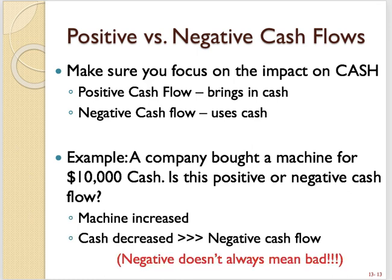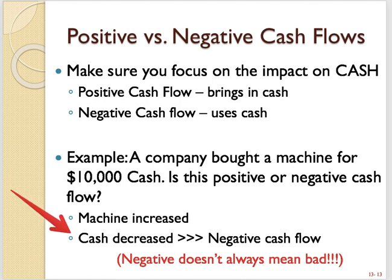Well, in that transaction, two things happen, as is true of any transaction — there's always a giving and a receiving, a give and a take. In this case, the machine increased; the company got a machine, and in exchange, they gave up cash. So the cash decreased.